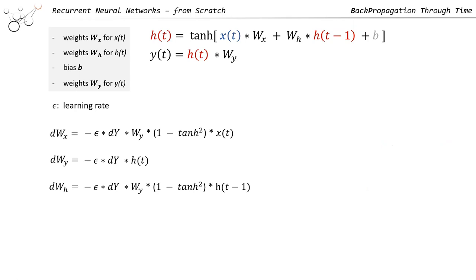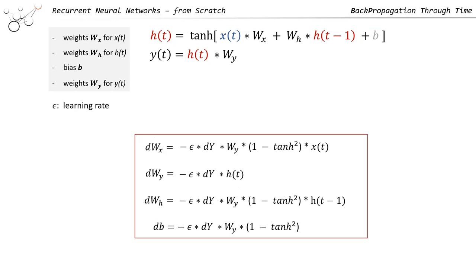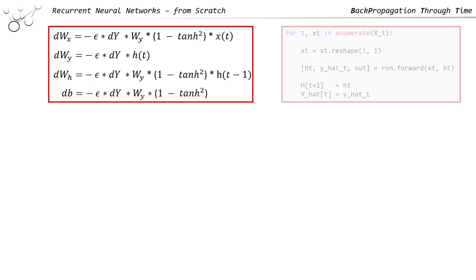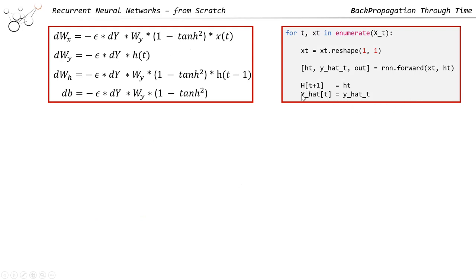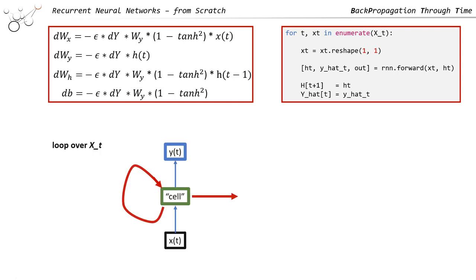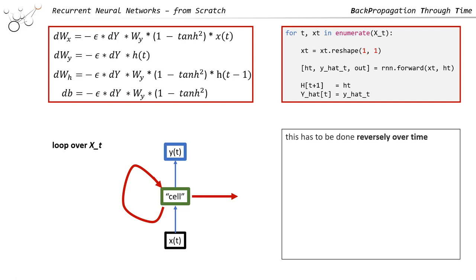For the bias, it's the same structure again. We have all the outer derivatives from tanh, and then the derivative with respect to the bias gives us just one. Now, in the forward part we calculate y-hat and h for every time point. We have to do the reverse process, starting at the last time point because in the forward part we essentially loop over xt using the same cell recursively.